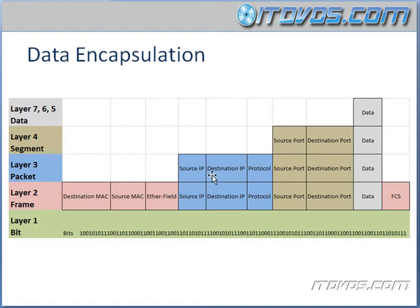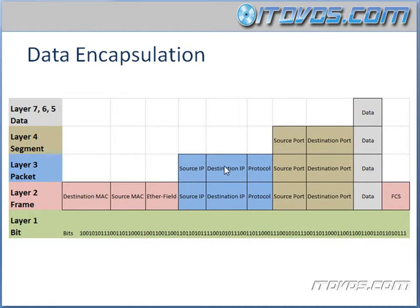Then at layer 3, another header is added, and that makes it a packet. It has a source IP, a destination IP, and a protocol. The protocol field indicates what protocol is being encapsulated by this packet. The source IP and destination IP are self-explanatory — for example, if my IP address is 192.168.6.100, that's my source IP, and if I'm sending to 192.168.6.50, that's the destination IP. This header is also called a control header.